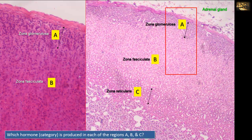Zone C is formed of small cells arranged in irregular cords, like a reticulum or a network, hence the name zona reticularis. The cells of the three zones, especially zona fasciculata, have a pale foamy appearance of the cytoplasm because the cytoplasm is rich in lipid droplets, which are necessary for hormone synthesis. The hormones are mineralocorticoids such as aldosterone from zona glomerulosa, glucocorticoids such as cortisol from zona fasciculata, and sex hormones such as androgens from zona reticularis.